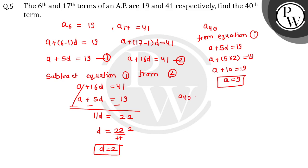A40 is A plus 40 minus 1 into D. A is 9, 39 multiplied by 2. 9 plus 78 equals 87. So A40 is 87. I hope this question is clear to you. Thank you.